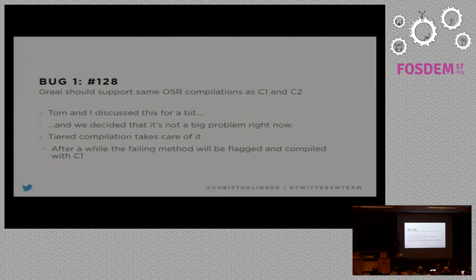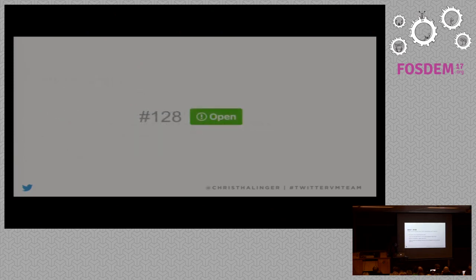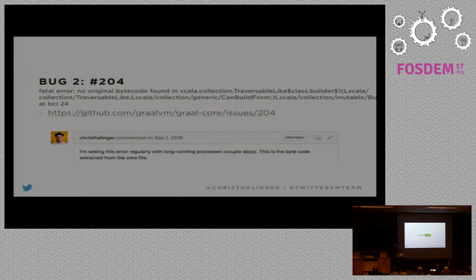Tom Rodriguez and I discussed this. In Graal's tiered environment it's not really a problem — after a certain number of failures the tiered compilation system stops compiling with tier four and falls back to tier one, compiling with C1, which works fine. It could be an issue for a very performance-sensitive method, but I haven't found such a case. JIRA-128 is still open, so if someone wants to fix it, please do.